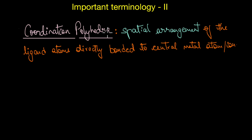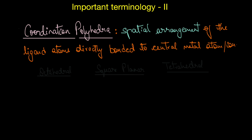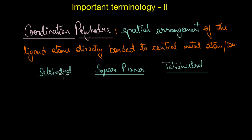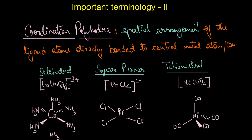Coordination polyhedron is the spatial arrangement of the ligand atoms that are directly attached to the central metal atom or ion. The most common coordination polyhedra are octahedral, square planar, and tetrahedral. For example, in [Co(NH₃)₆]³⁺, cobalt is bonded to six ammonia molecules and the coordination polyhedra is octahedral.